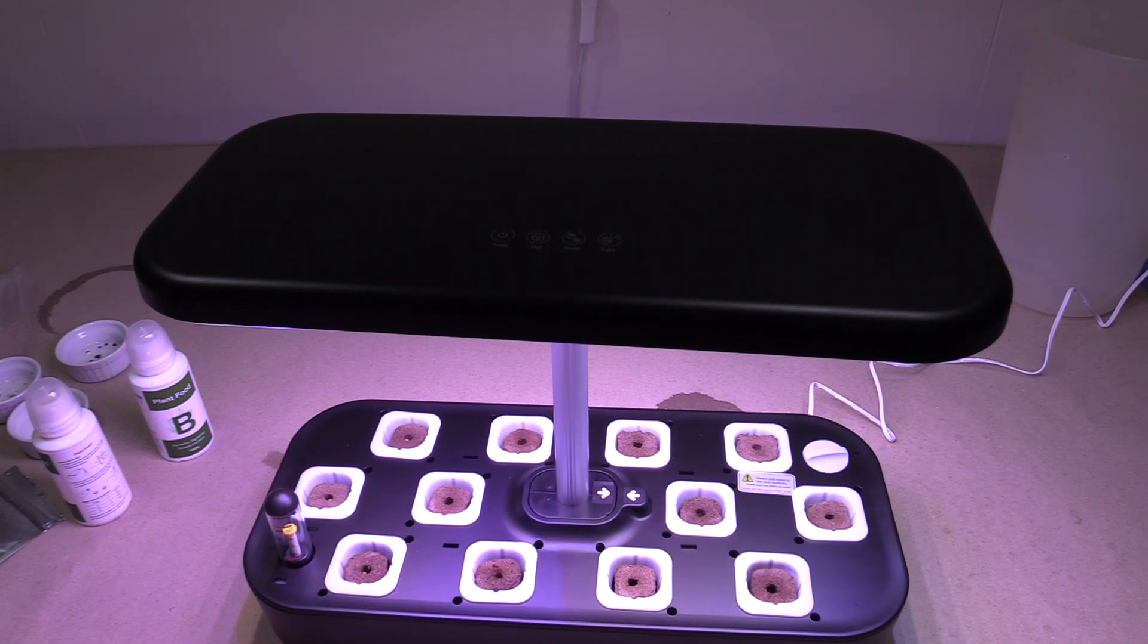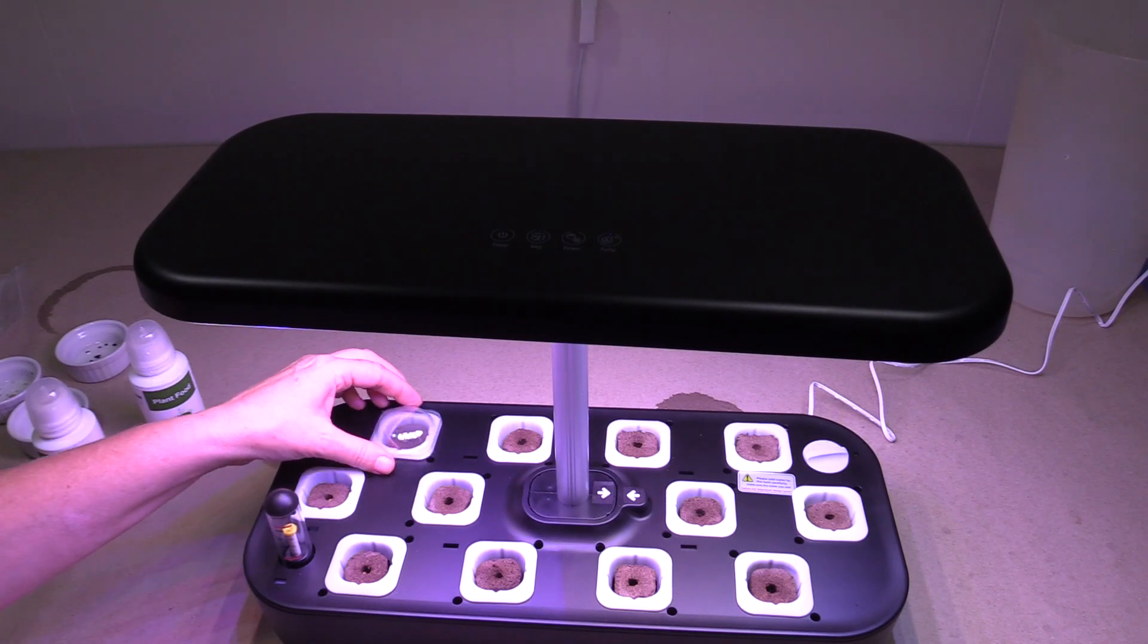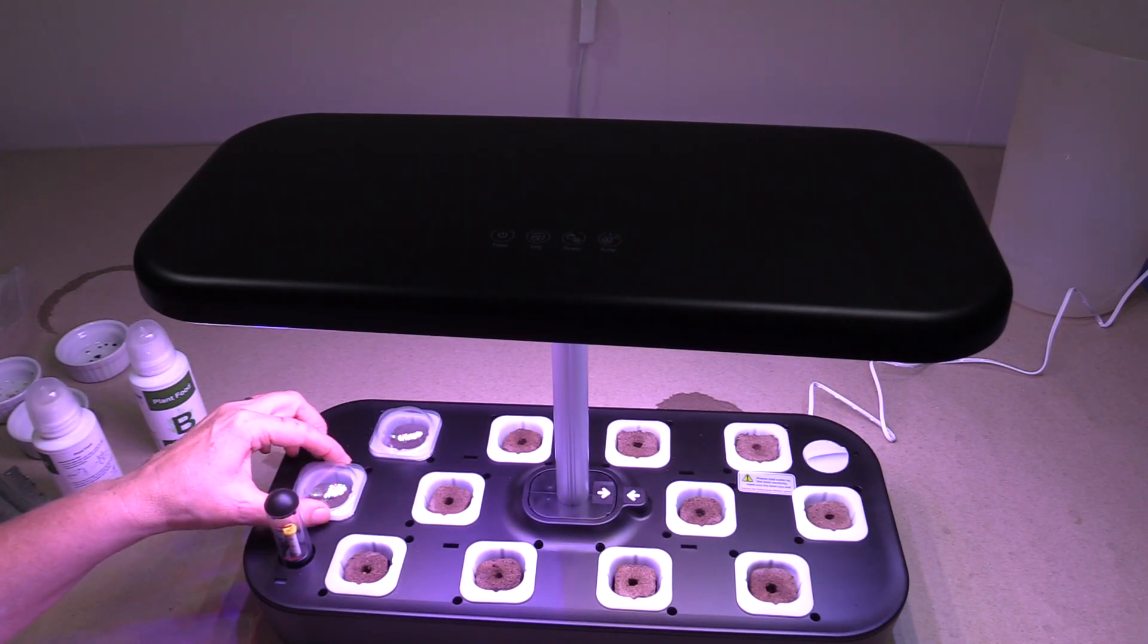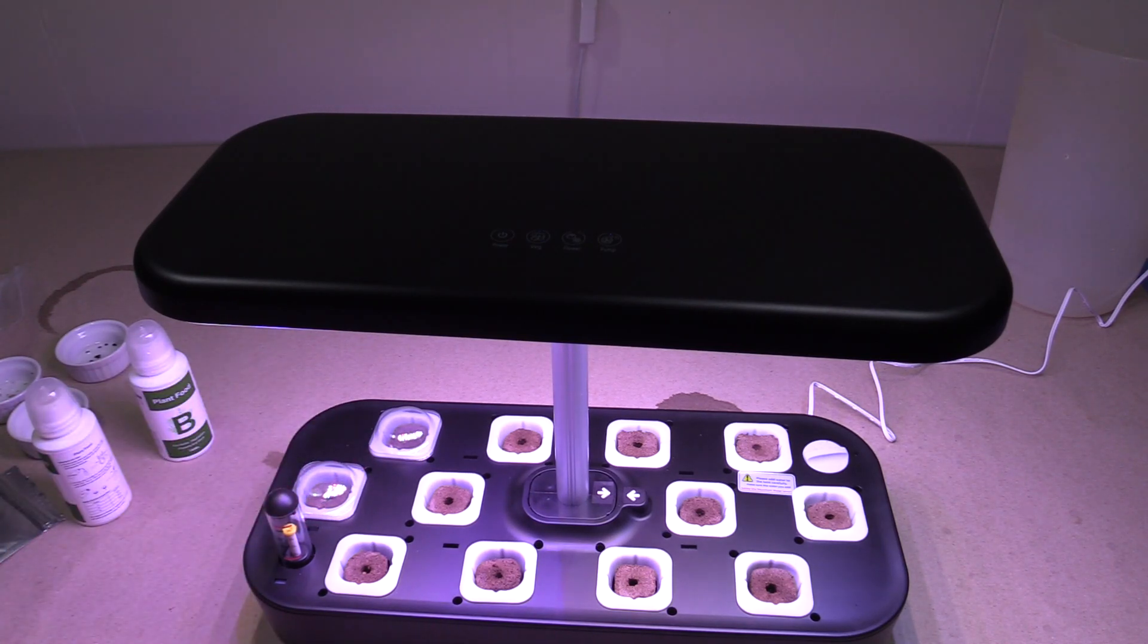Now to keep the area humid we've got these little domes that we put on and you want to leave these in place until they sprout. As soon as they start sprouting you'll remove the dome and they may sprout at different times. It depends on what you're growing. With these little lids you're going to get some increased humidity which is going to cause them to sprout much sooner.